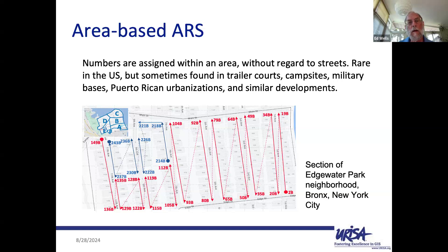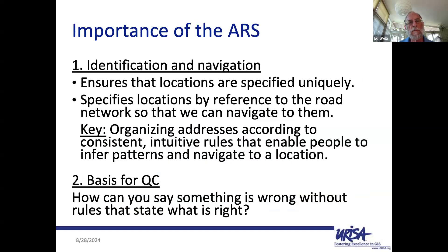Those are the three kinds of address reference systems. They're important because they ensure locations are specified uniquely, they specify locations by reference to the road network so we can navigate to them, and they organize addresses according to rules that are consistent and intuitive so people can infer patterns. They're also the basis for QC. If you think something is wrong, how can you say so without a rule stating what is right? These are the rules that tell you what is right and what is wrong.